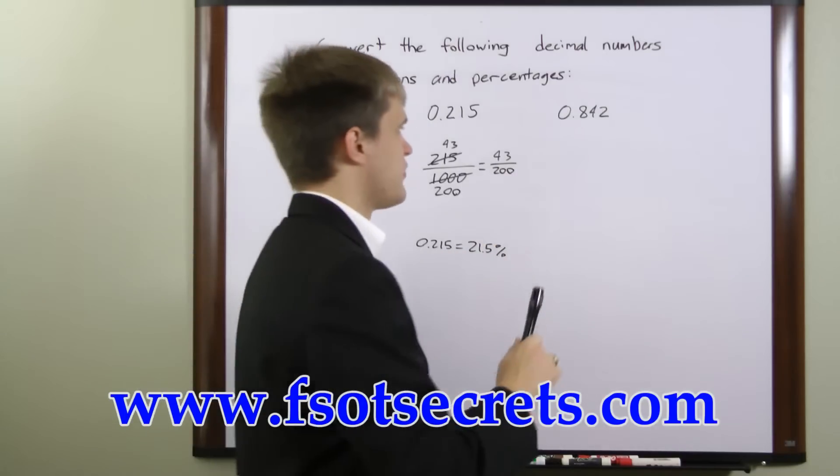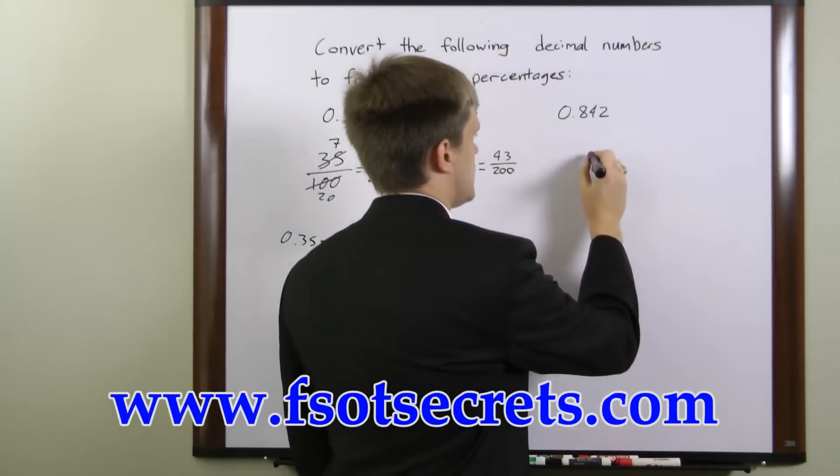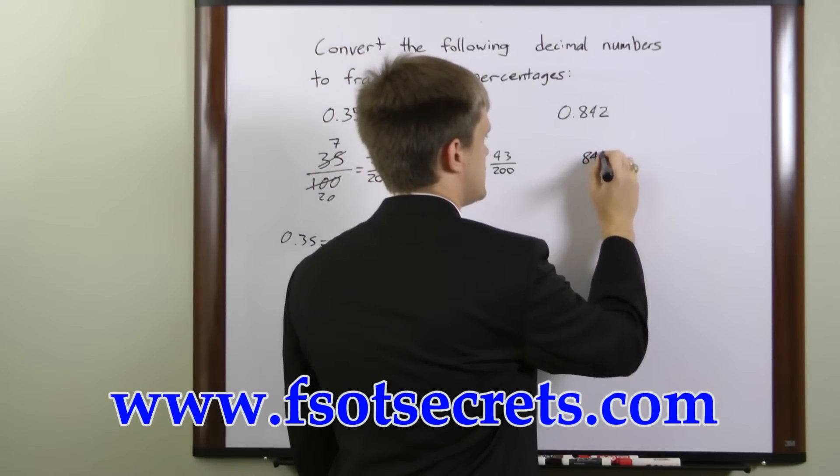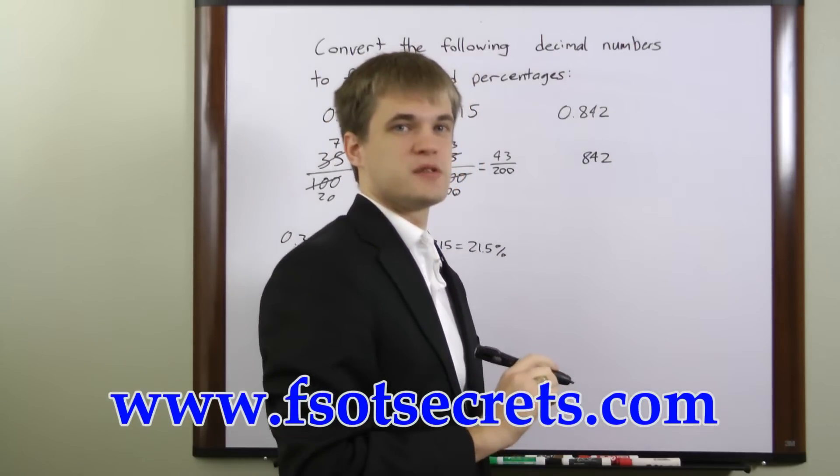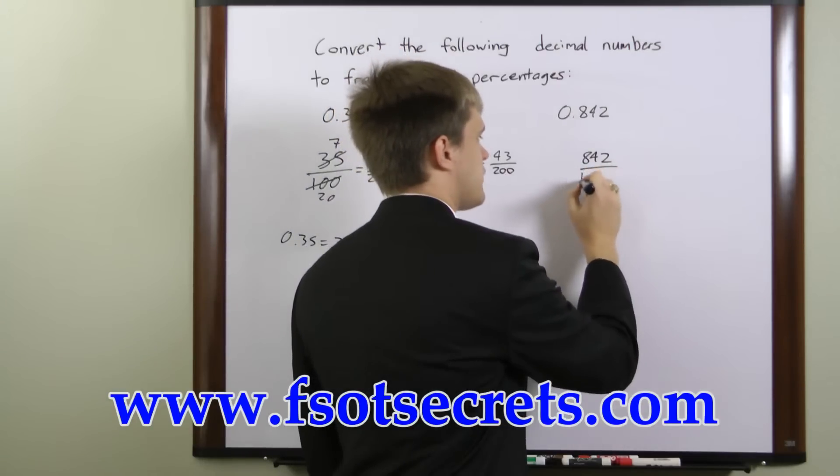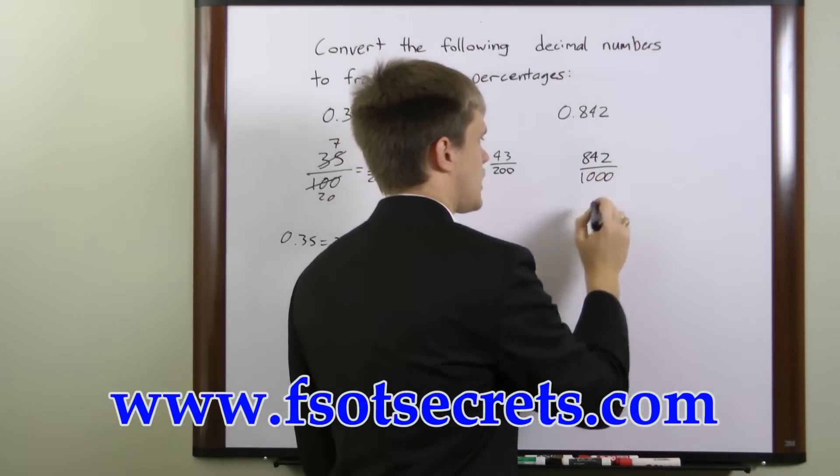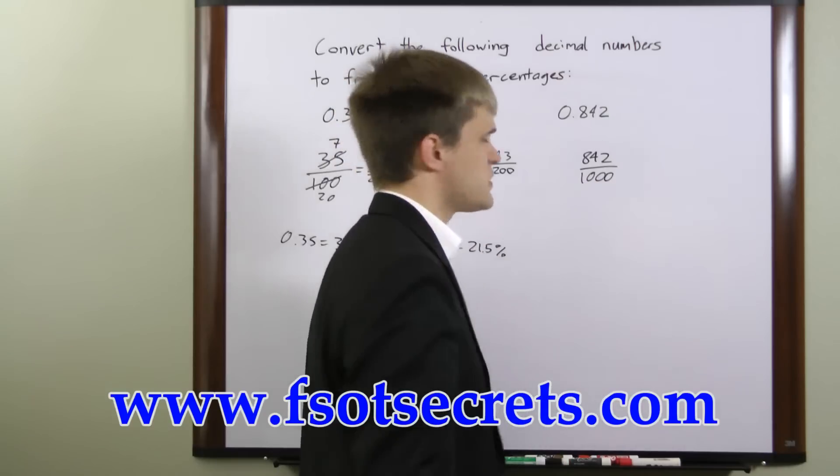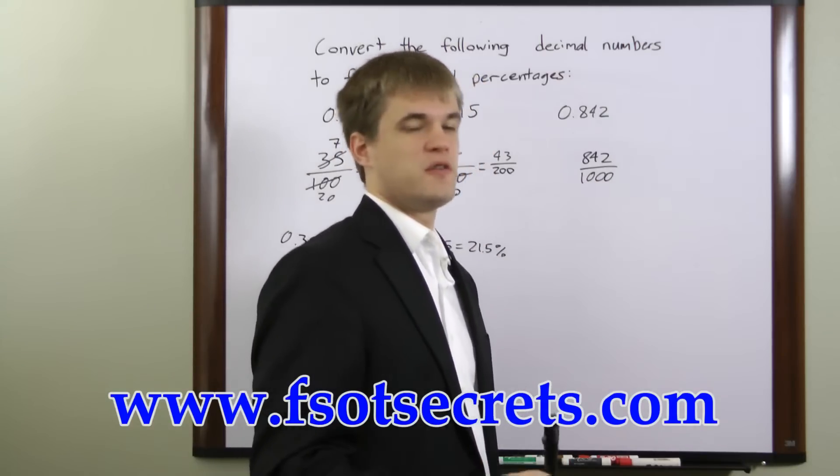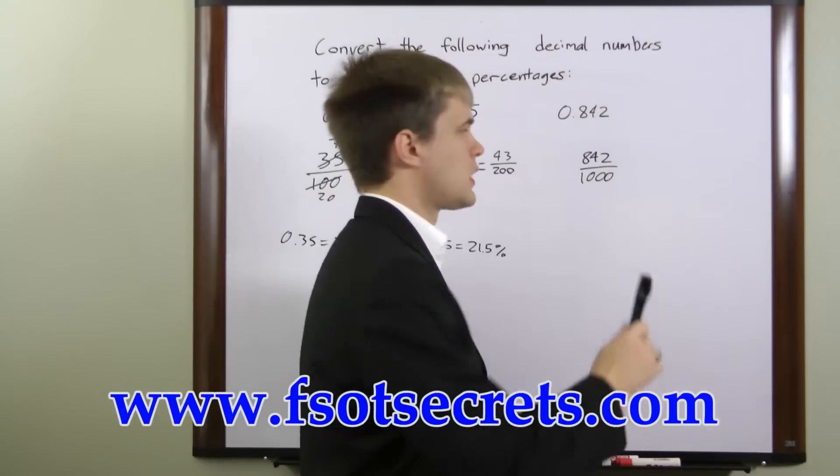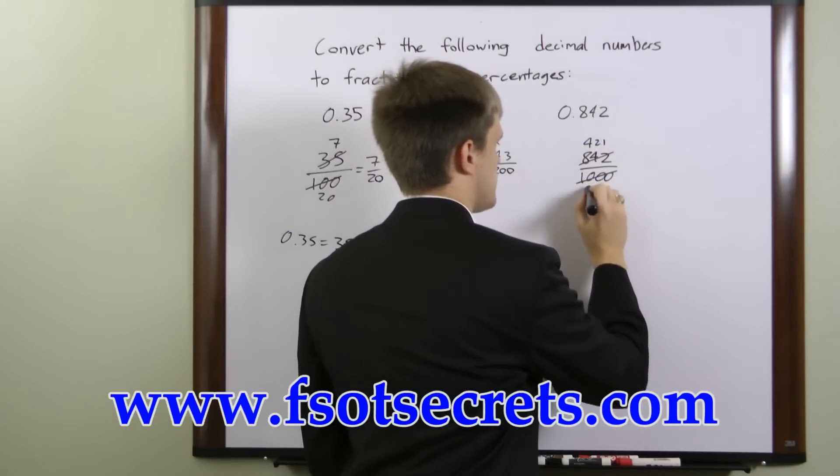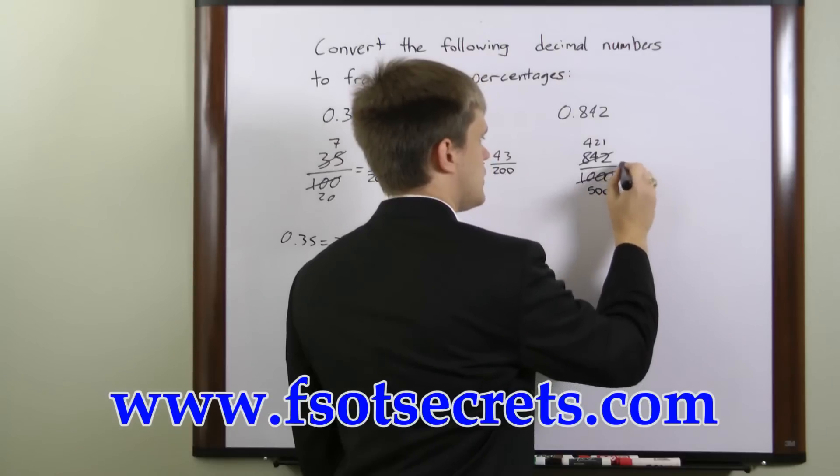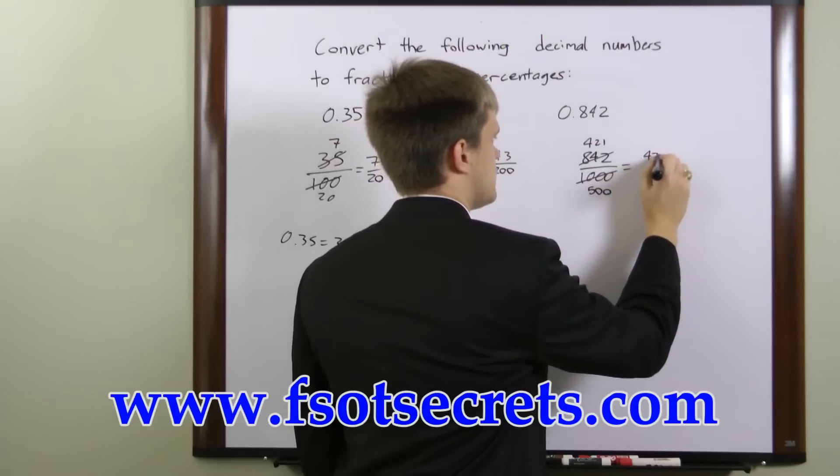In this final example we have 0.842. We will once again write these digits as our numerator. The rightmost digit is 3 places to the right of the decimal, so we will once again have three zeros in our denominator: 842 over 1,000. We can reduce by dividing top and bottom by 2. 842 over 2 is 421 and 1,000 over 2 is 500. So this fraction reduces to 421 over 500.